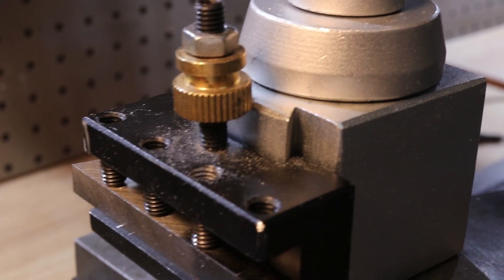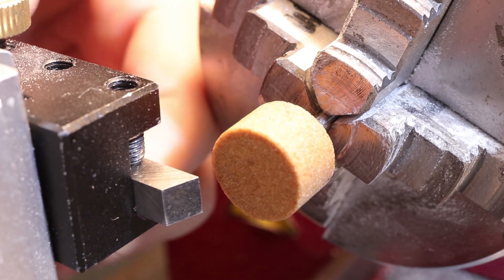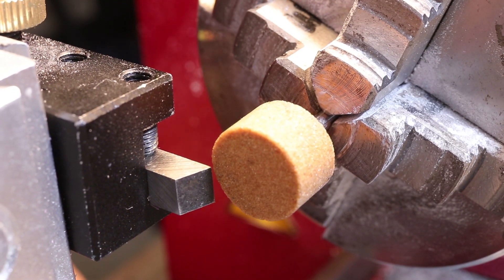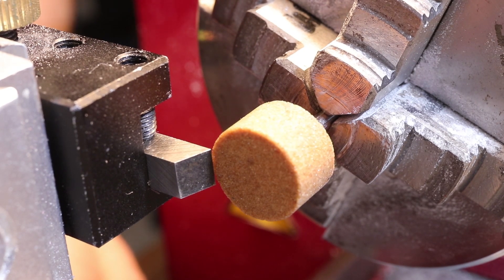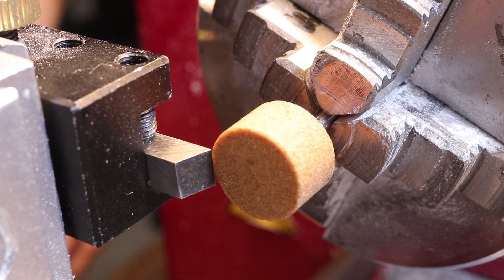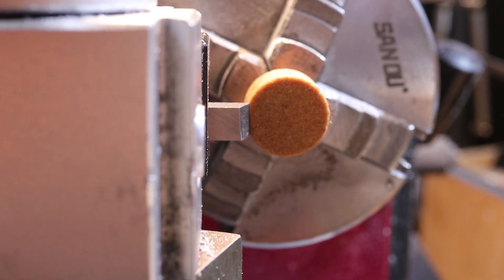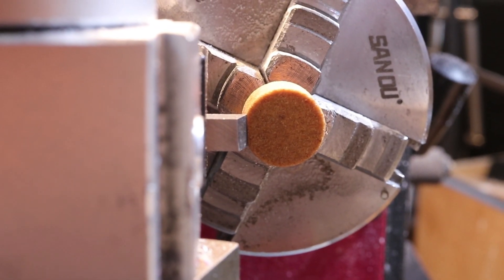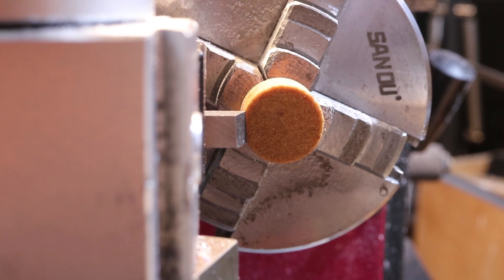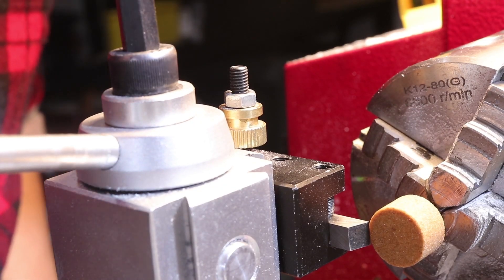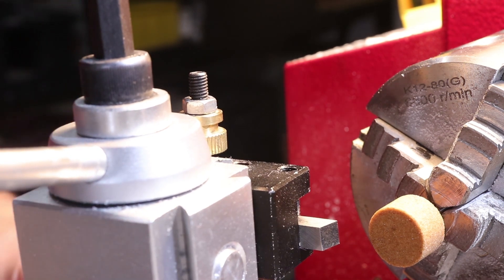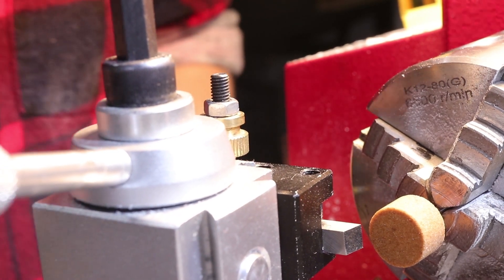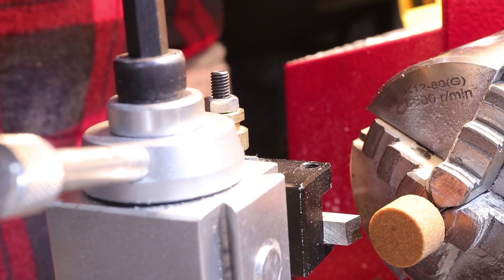The first thing to do is put your steel in the tool holder, then adjust it so the top of the steel is just above the center line of the grinding wheel. Then rotate the tool post to give the front face a relief angle. Luckily for me, my steel already had a relief angle cut into it, so grinding it will be a little easier.